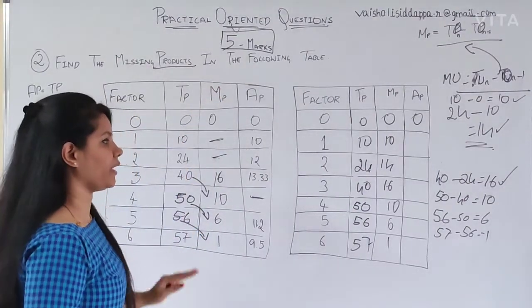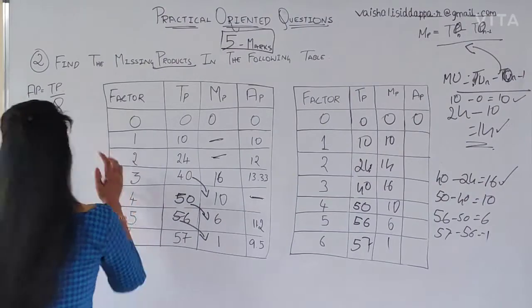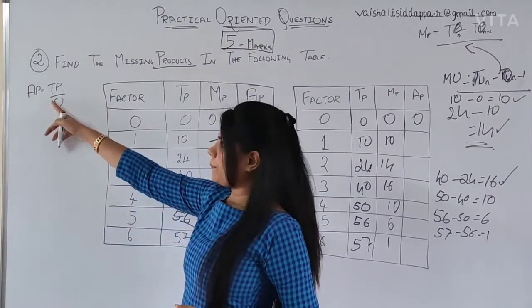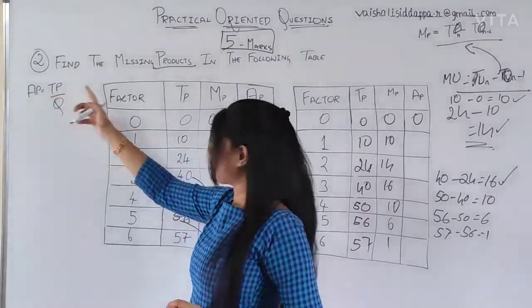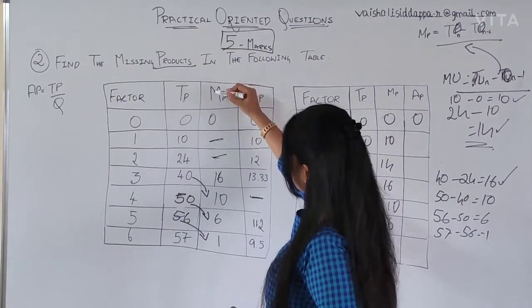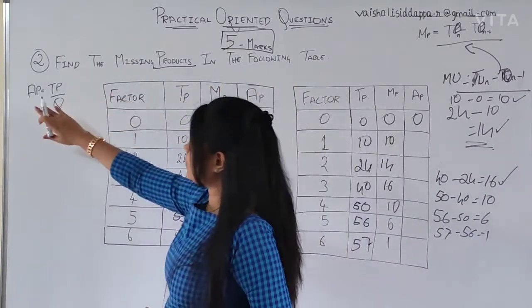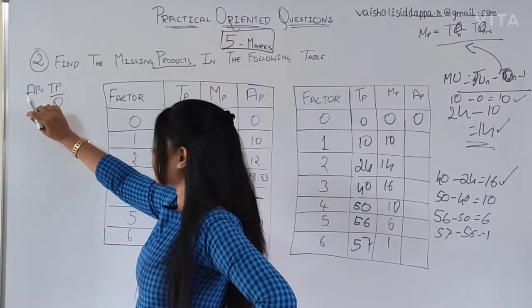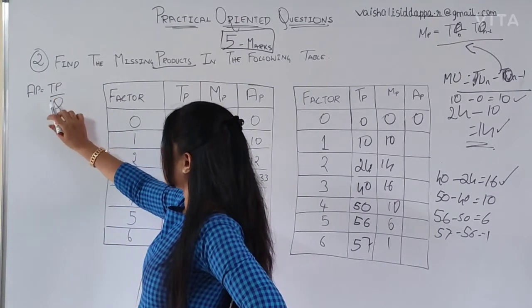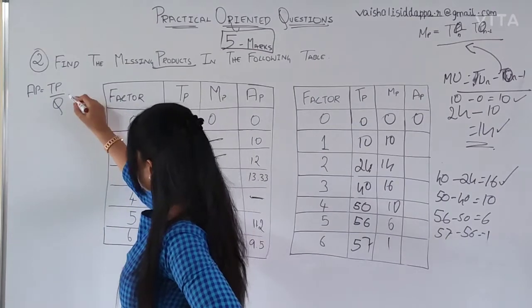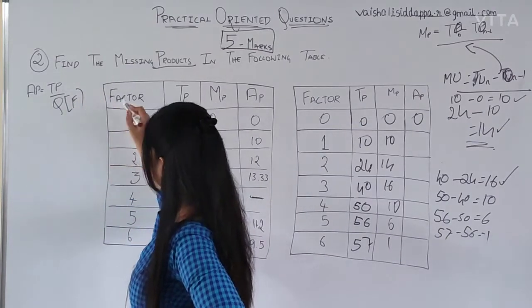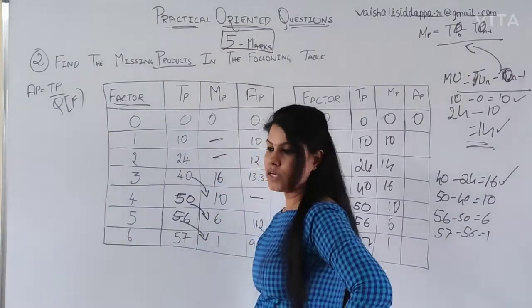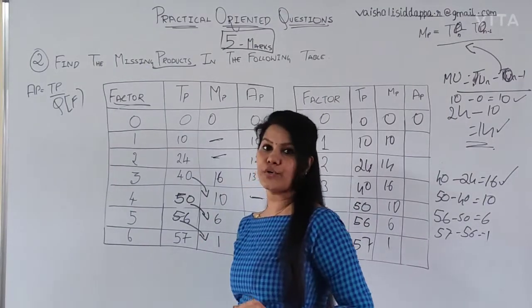So now, the last one is AP. We will come to this here. To find out AP, AP is nothing but average product. This is the total product, marginal product and average product. Now, you have average product here. To find out the average product, the formula what you have, total product divided by Q. Q is nothing but here, factor. This one. So, now let me tell you how you are going to construct this.